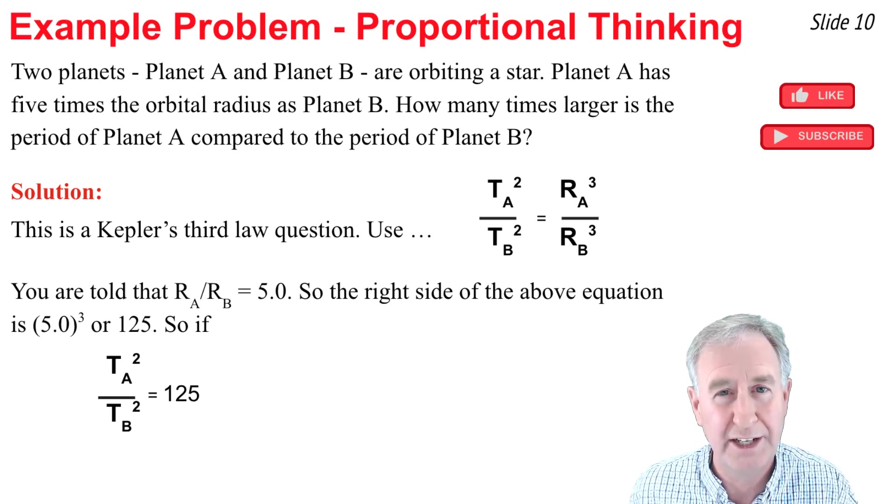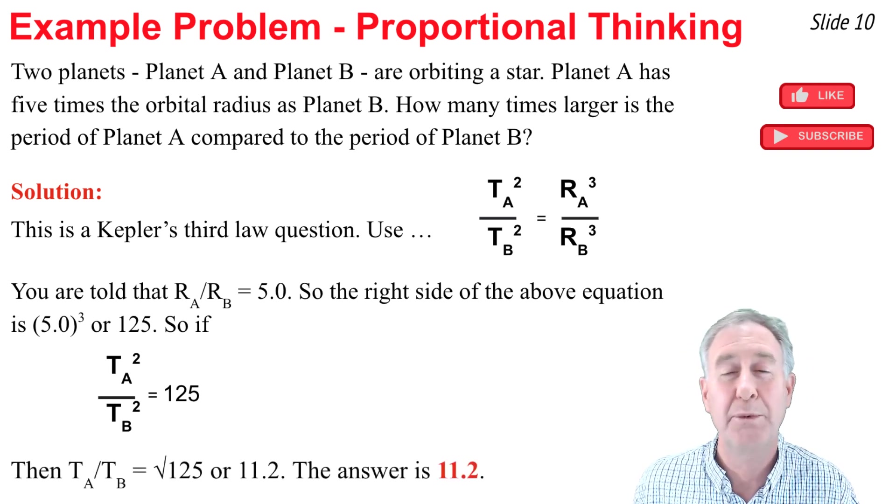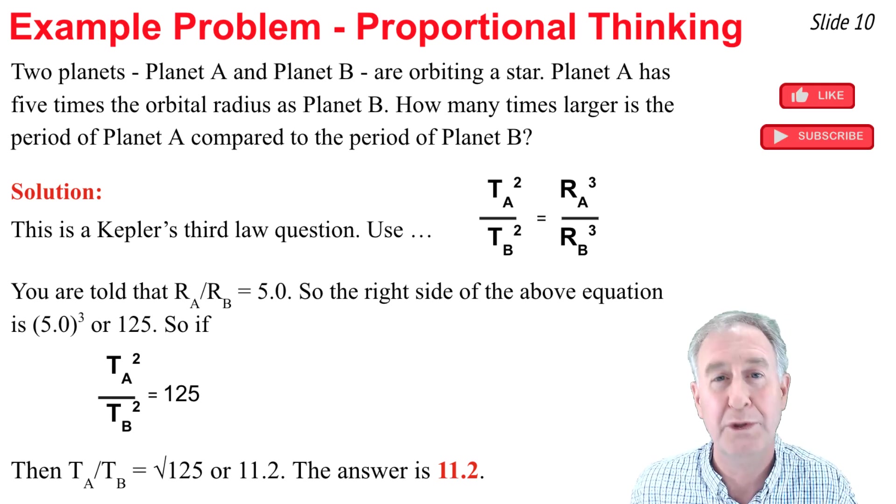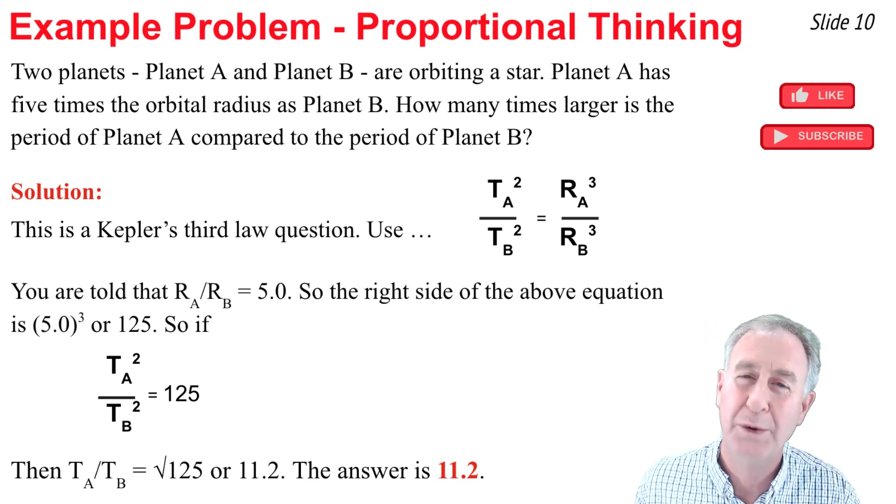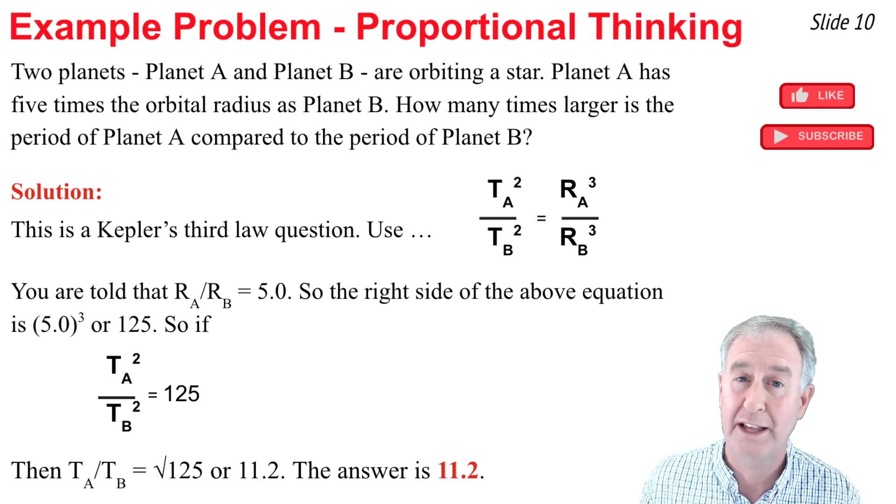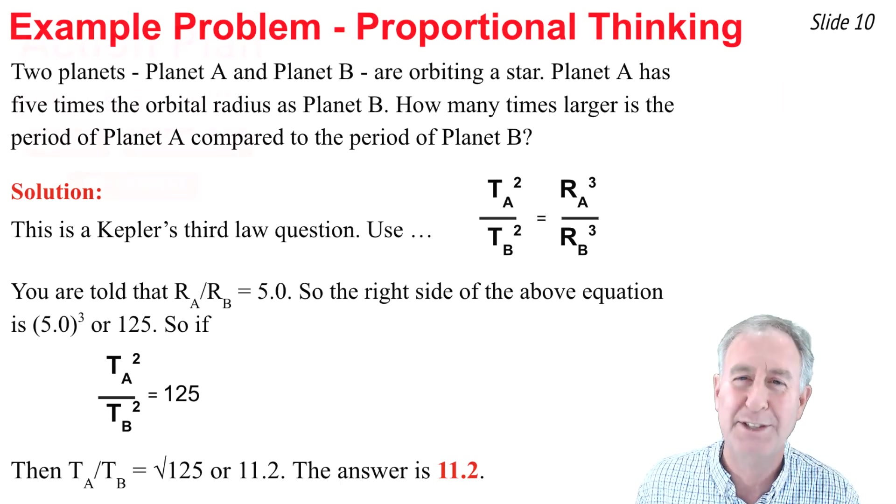and when I do, I get the ratio of the periods of A to B is equal to the square root of 125, or 11.2. In other words, planet A has a period that is 11.2 times greater than the period of planet B, and that's the answer.